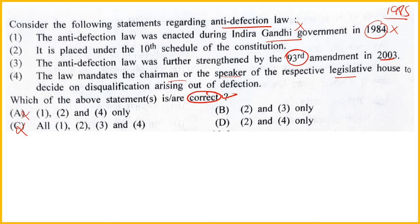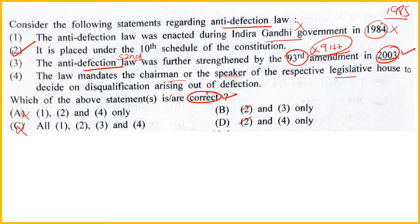Statement 2 - anti-defection 10th Schedule ke andar aata hai, bilkul sahih hai. Toh ab B ya D mein se answer aayega. Statement 3 - anti-defection law aaya tha 52nd Amendment se, aur further changes laye 91st Amendment se 2003 mein, 93rd se nahi. Toh Statement 3 galat hai. Important amendments yaad honi chahiye - UPSC aur state exams dono mein puchha jaata hai. Statement 3 galat hone se answer automatically D ho jaata hai.